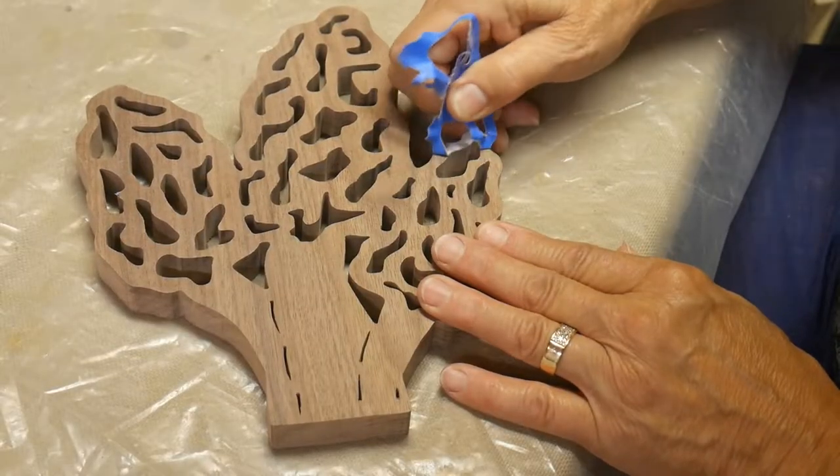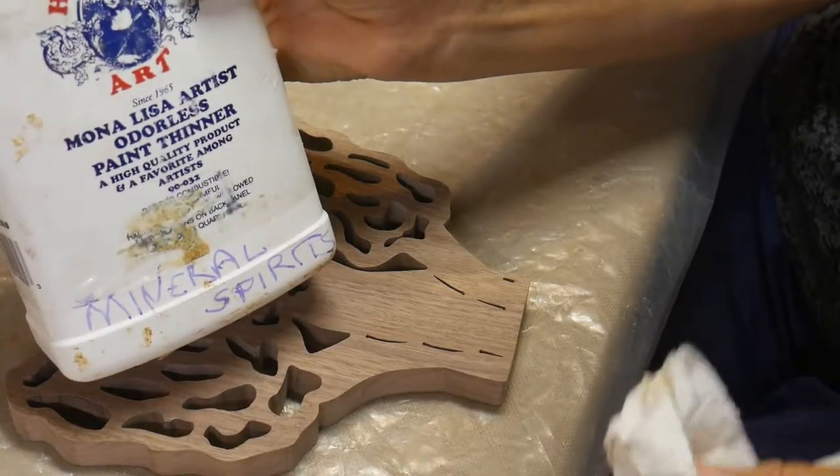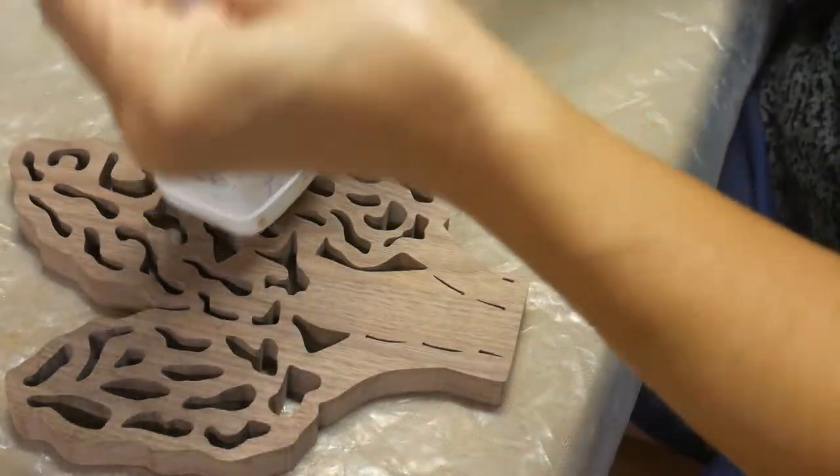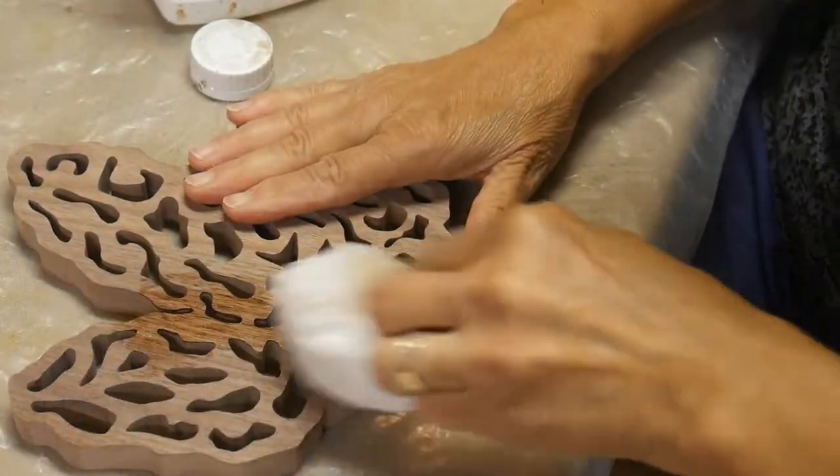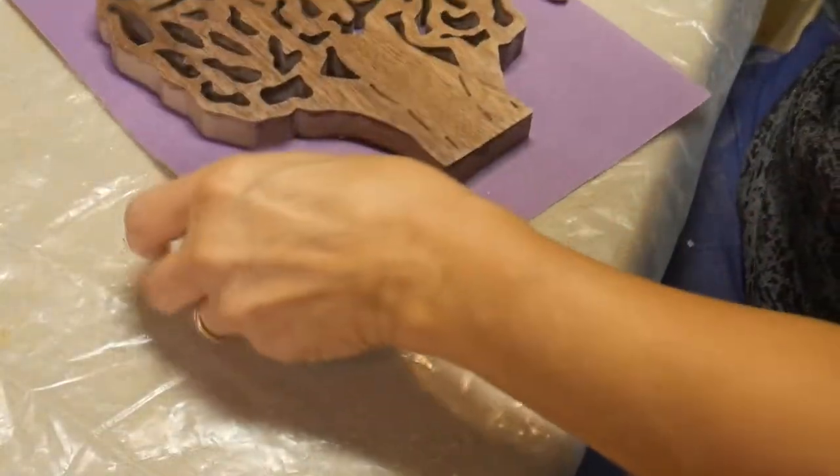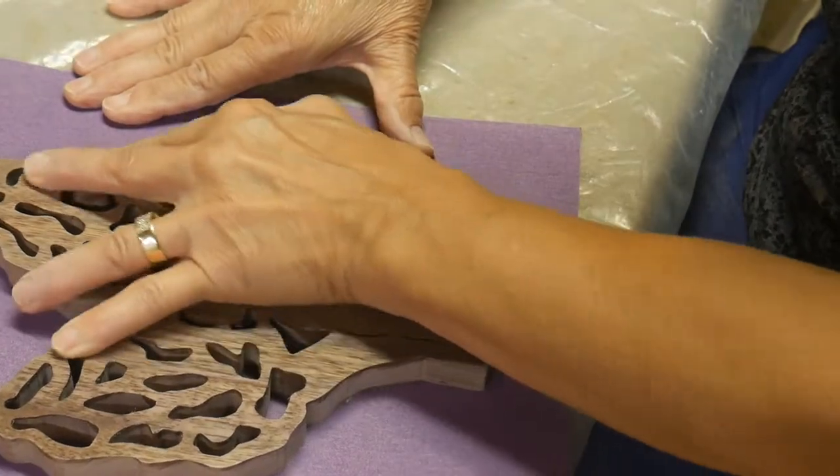And after you remove that, there's going to be a little bit of residue left from the tape. So I take mineral spirits, and I actually clean the whole piece off just to make sure there's no residue left. Then it's time after it dries, to use 220 grit, sand everything on your piece.